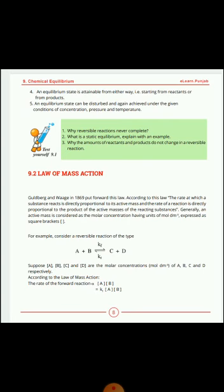We have completed our first topic: reversible reaction and dynamic equilibrium. Here are some questions for you — please search for answers from the first two lectures. Why do reversible reactions never complete? What is static equilibrium with an example? Why do the amounts of reactants and products not change in a reversible reaction? Because reactants react to form products and products again react to form reactants. Allah hafiz.